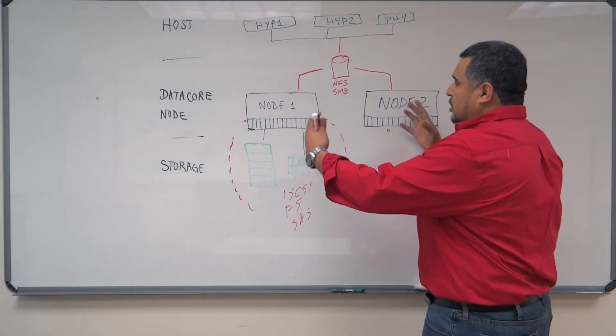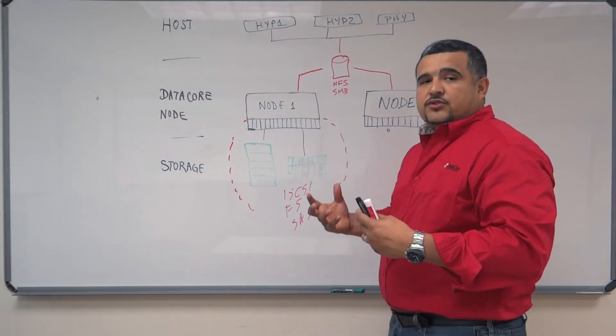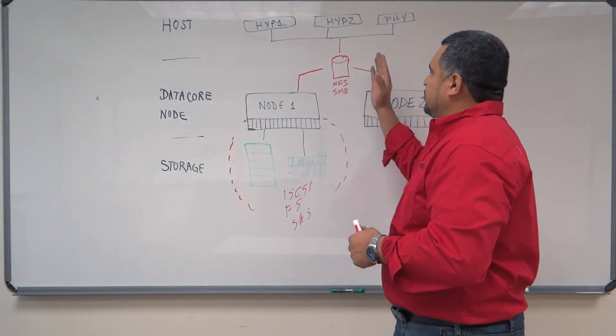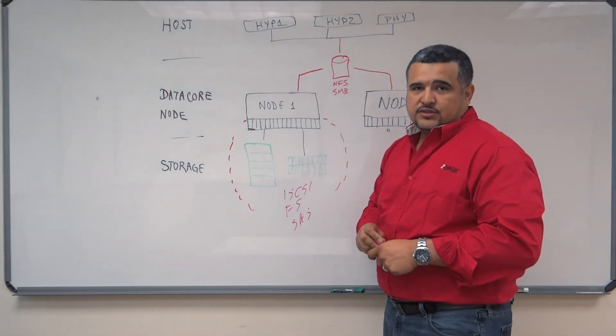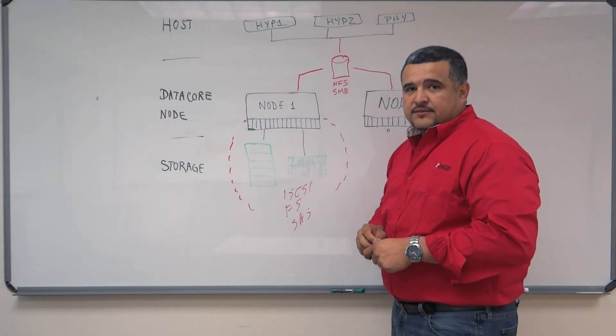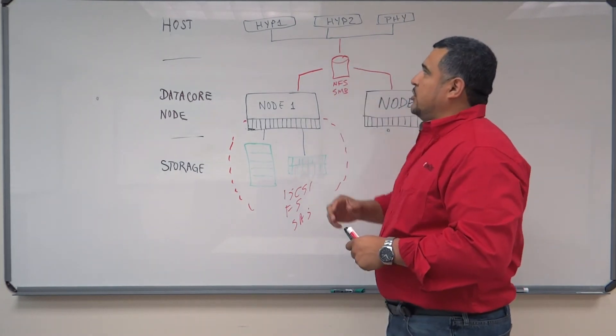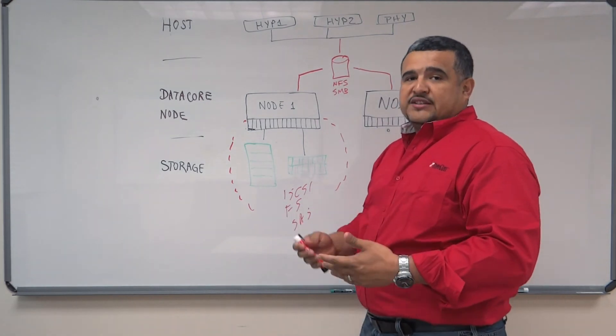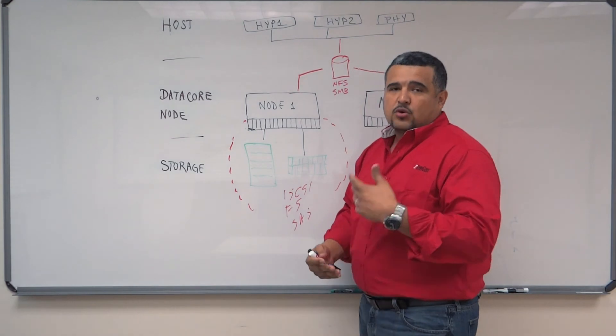Once DataCore has both nodes with storage attached to it, we're able to present a target to the host. Those targets can be SMB or NFS and can be shared amongst different hosts, whether they're hypervisors or operating systems, Unix-based or Windows-based.